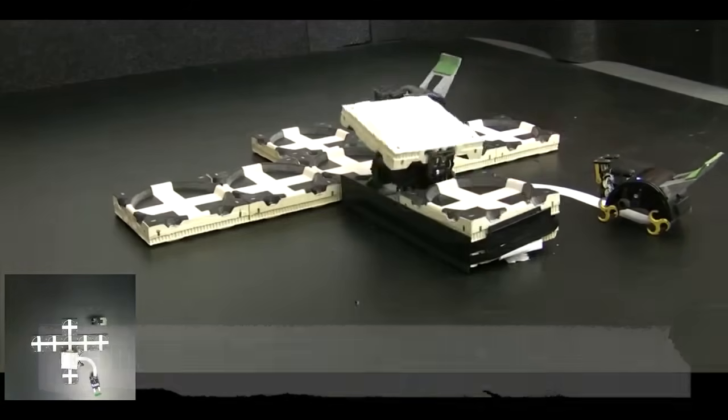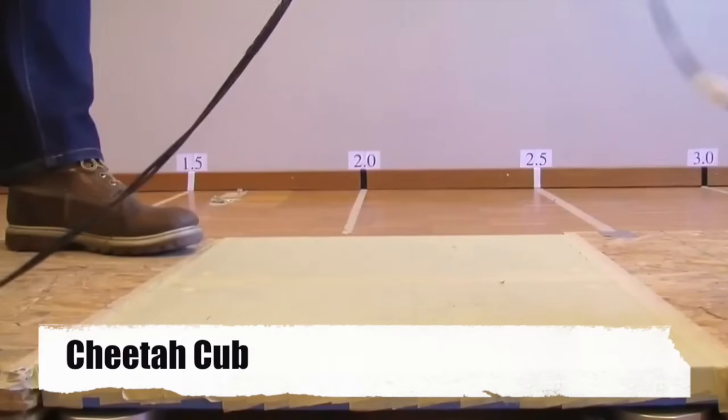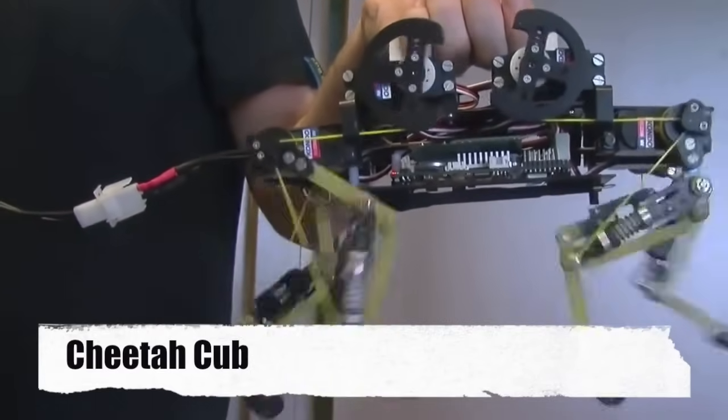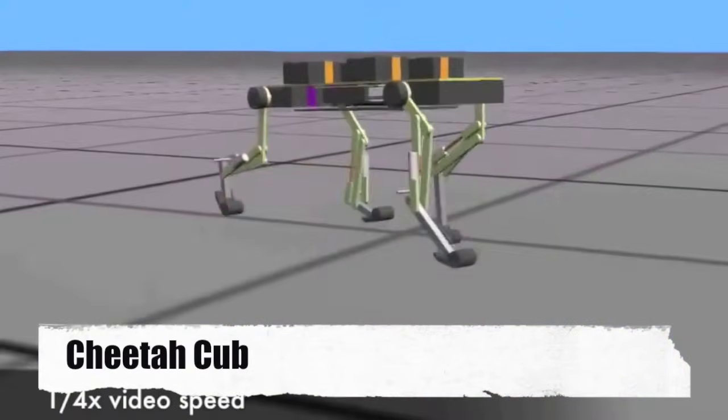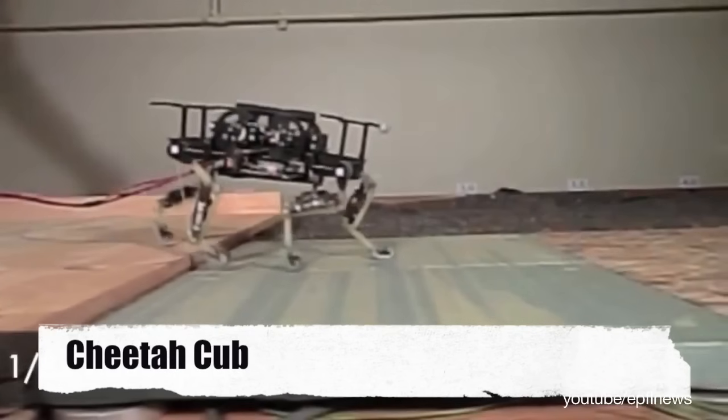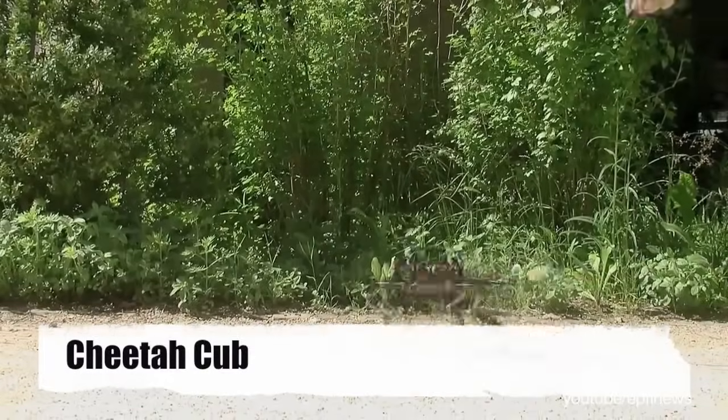Cheetah Cub. Wanting to know how to make robots take control of tough terrain with the grace of a feline, scientists at the Swiss Federal Institute of Technology made a robotic cat. Using it, they can assess joint force and agility without having to harm an actual animal.